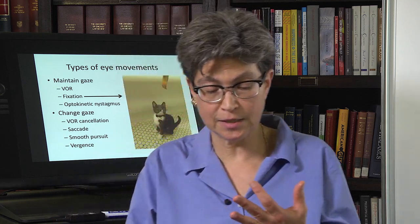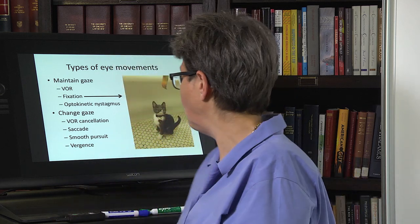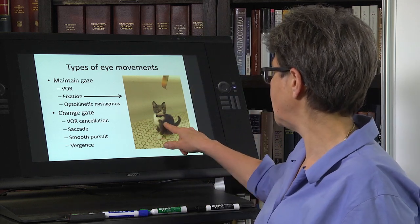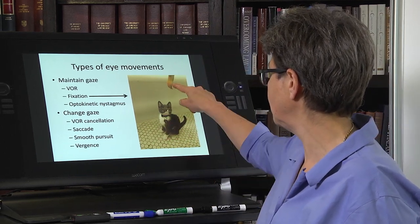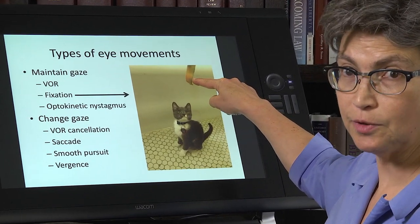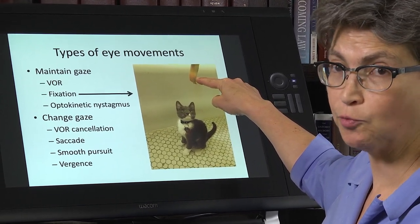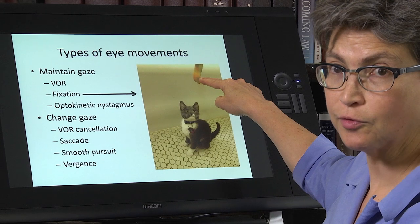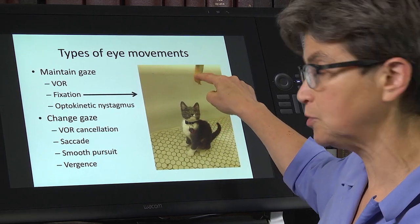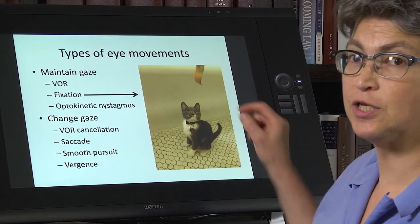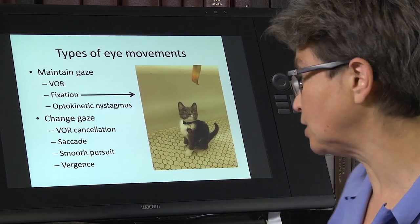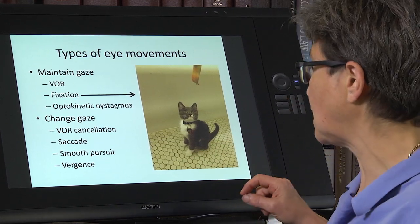What maintains gaze? One is fixation. Here is this cat looking at that object in great hopes that it will move so that the cat can go crazy about the moving object. This fixation is an active process, and we will see the consequences of that later.